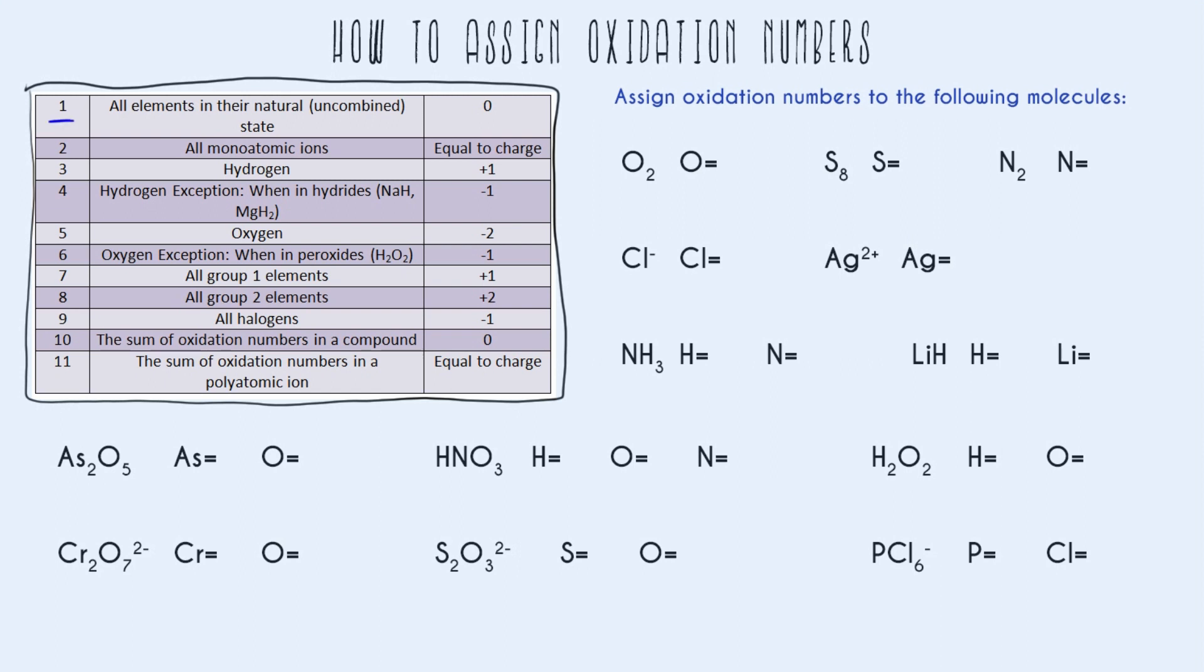Starting with rule number one, all elements in their natural state, which just means uncombined, have an oxidation number of zero. Our first few examples are all like that. When oxygen is in its uncombined state, it exists as O2. Each oxygen in this molecule would have an oxidation number of zero. Next, S8, sulfur uncombined, it's just by itself, then it would also have an oxidation number of zero. And N2, same thing. When nitrogen is uncombined, when it's just by itself, it appears as N2, and so its oxidation number for both nitrogens would be zero.